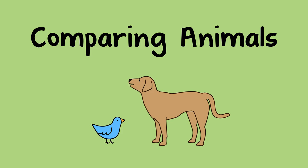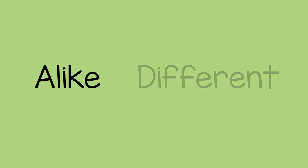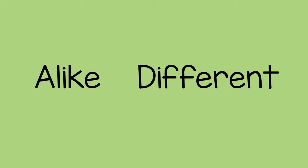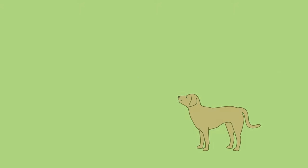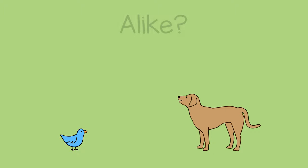You can help a child learn about animals by talking about how they are alike and different. For example, if you see a dog and a bird, you could say, they are both animals. How are they alike?